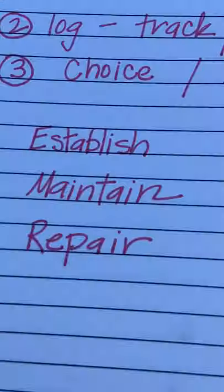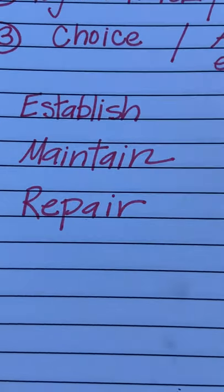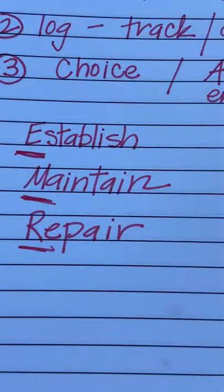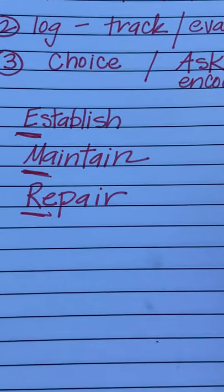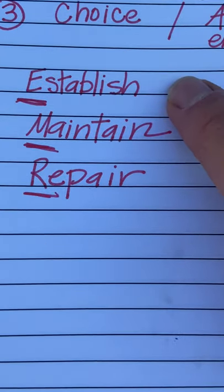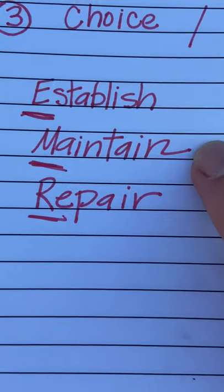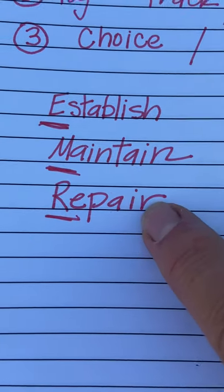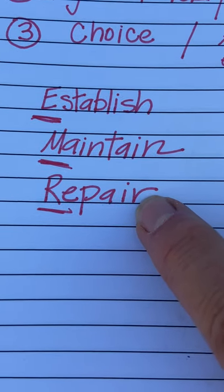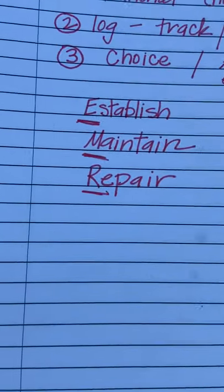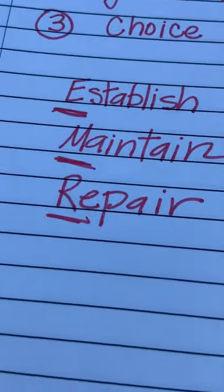I first heard of this idea of relationships from Grace a few years ago — the idea of Establish, Maintain, and Repair, which we call EMR. You've probably heard of it; we usually discuss it with new hires. But it's perfect for us when talking about connecting. How are we going to establish connections purposefully and intentionally? The maintain piece is how we keep that going after our initial activities. And repair is how you evaluate to see if you need to go back and do something different for a particular student.